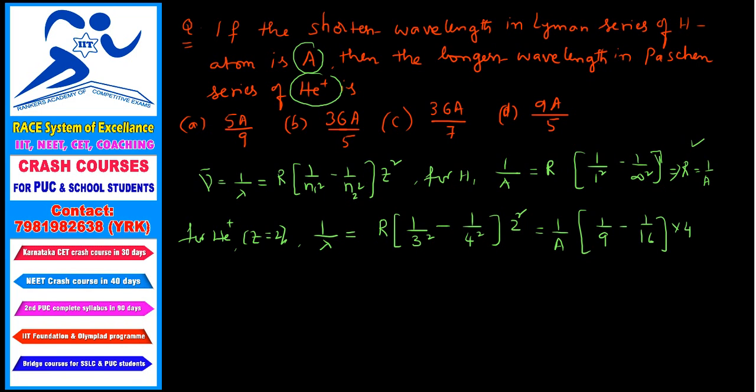That equals to, 16 minus 9 is 7. So 7 into 4 by 9 into 16 into 1 by A. So it will become A equals to 7 by 36 A.